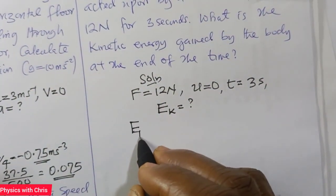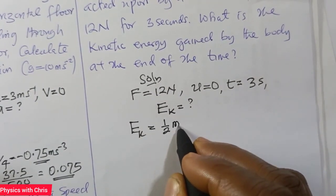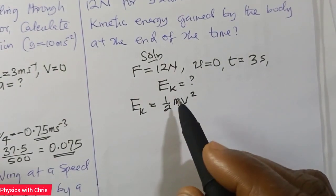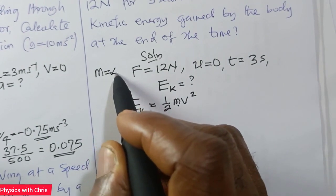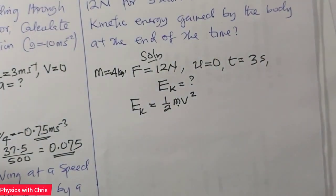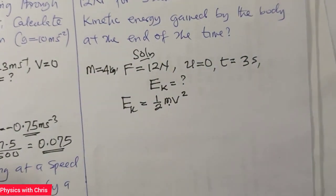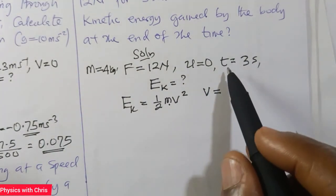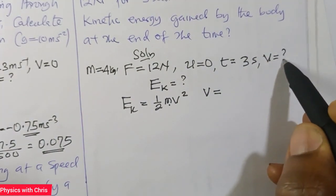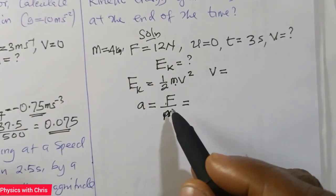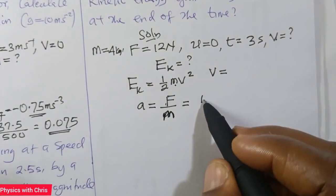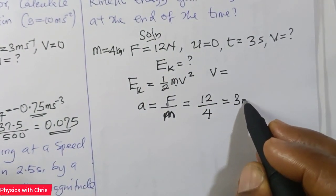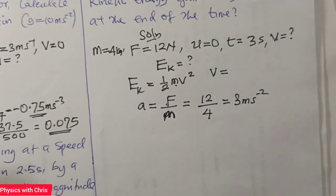Kinetic energy is given by EK = ½mv². I have the mass of the body, which is 4 kg. I need to find the speed using one of the equations of motion. I can first find the acceleration: a = F/m = 12/4 = 3 m/s². That gives the acceleration of the body as 3 m/s².